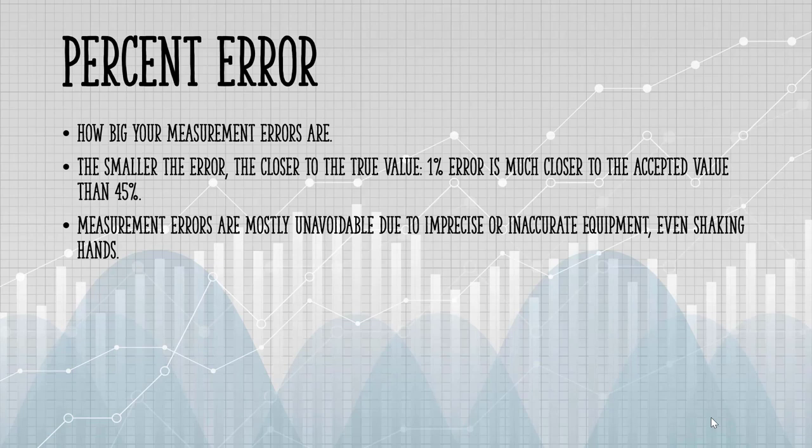Measurement errors are mostly unavoidable. Equipment can be imprecise, hands can shake, or your instruments just might not have the capability to measure accurately. Percent error will let you know how badly these unavoidable errors affected your results.